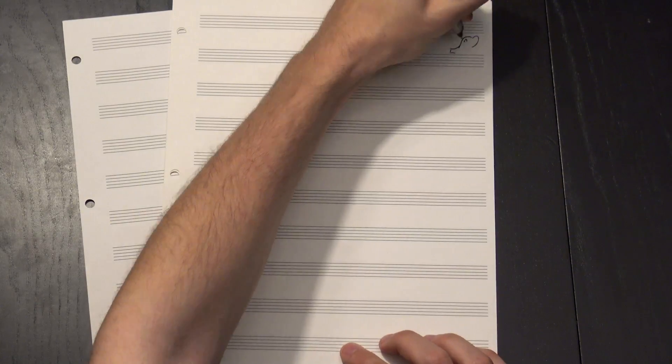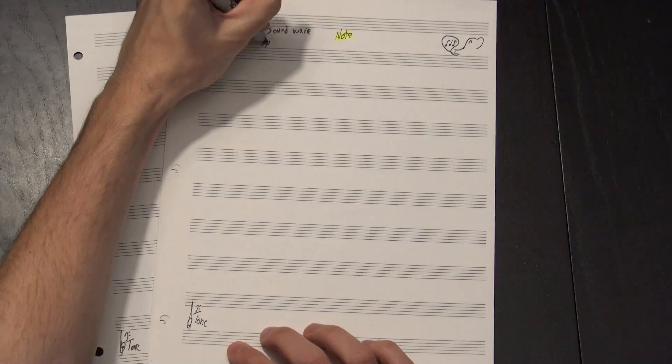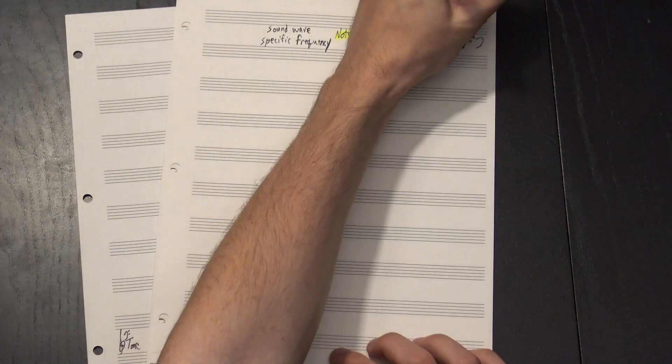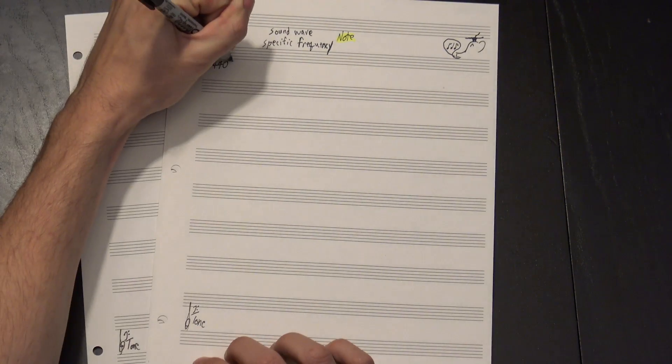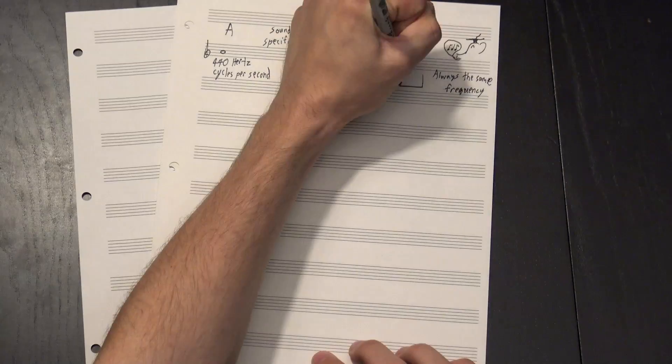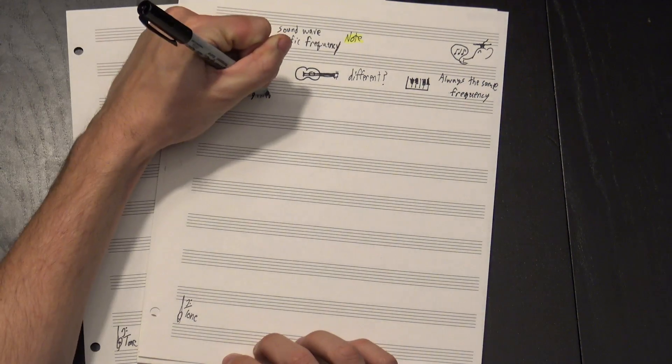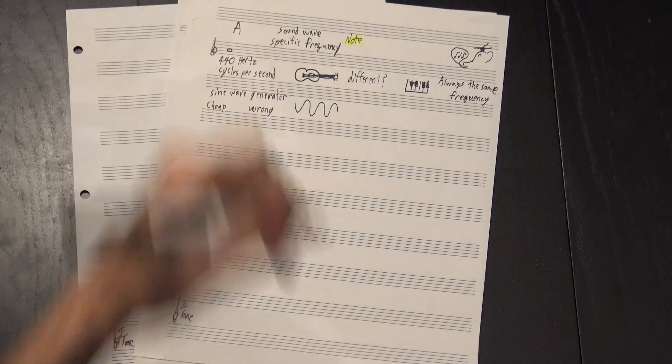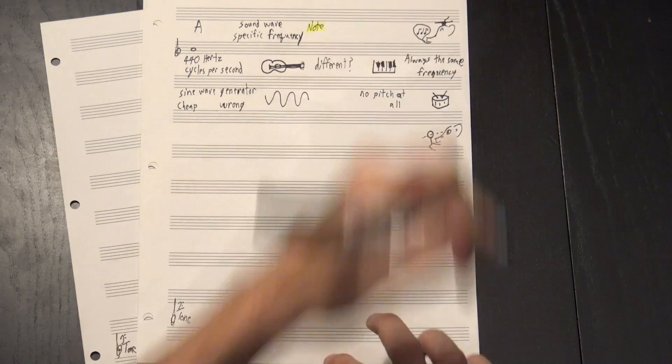Hey, welcome to 12tone! If you're watching videos about music theory for fun, you probably already know that a note is a sound wave with a specific frequency. You may even know that traditionally we tune our instruments so that this A is 440 hertz or cycles per second. But if it's always the same frequency, why do this and this sound so different? Why does a sine wave generator feel cheap and wrong? And why does a snare drum sound like no particular pitch at all?